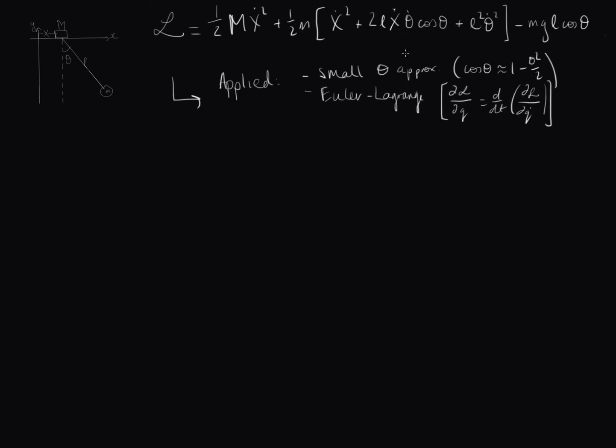And then we put this into the Euler-Lagrange equation. Because we have x and theta, two coordinates, we end up with two Euler-Lagrange equations.